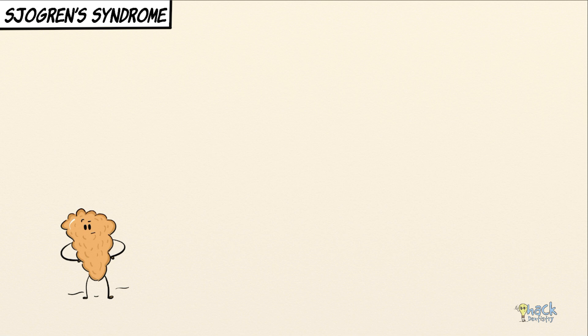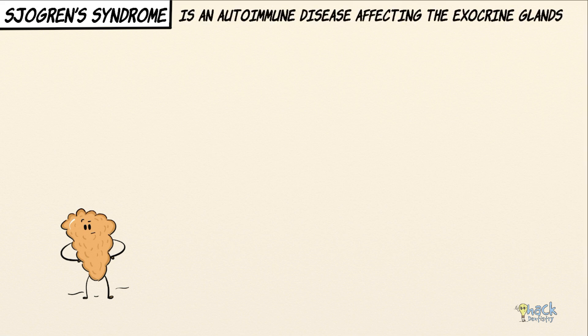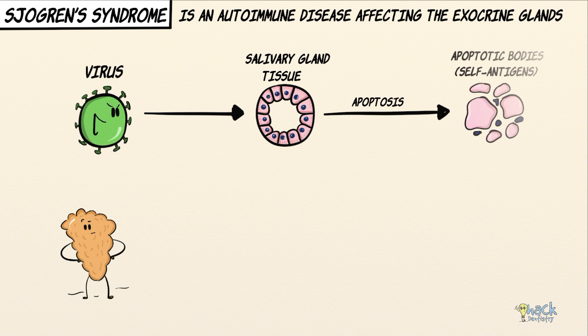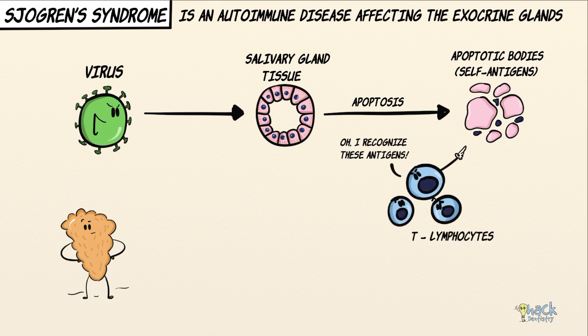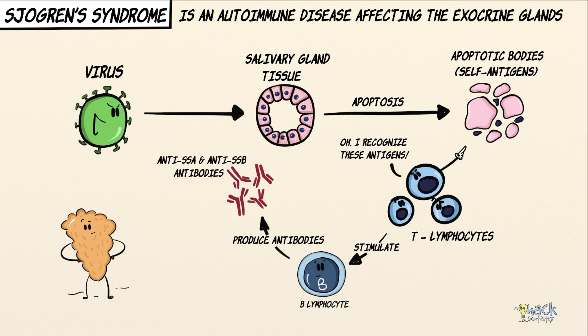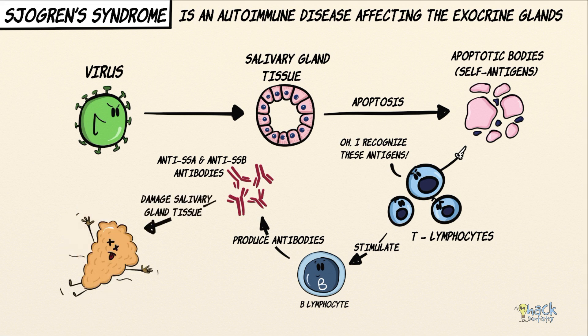Sjögren's syndrome is an autoimmune disease affecting exocrine glands. Certain viruses may induce apoptosis of salivary gland tissue, exposing antigens — the apoptotic bodies of the salivary gland tissue — which are recognized by self-reactive lymphocytes or T cells. T cells further stimulate B cells to produce anti-nuclear antibodies like anti-SSA and anti-SSB, causing sufficient damage to the salivary glands.